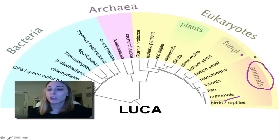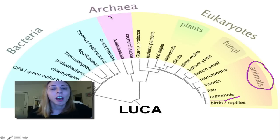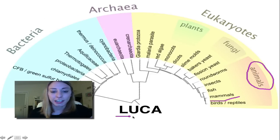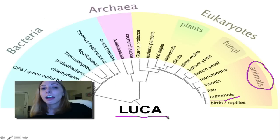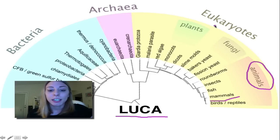We can trace back all lineages — whether you're a fungi, a plant, animals like us, archaea, or bacteria — all the way back to this last universal common ancestor, and we know that all this life actually uses ATP.